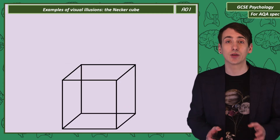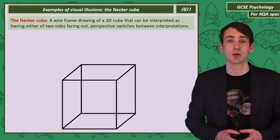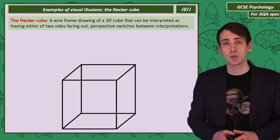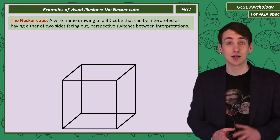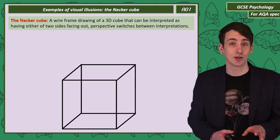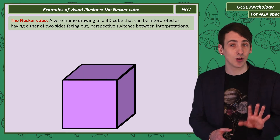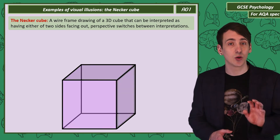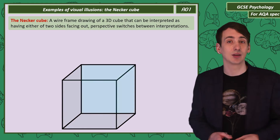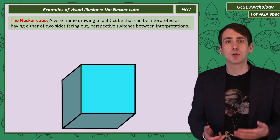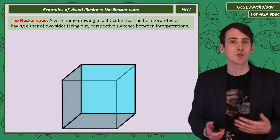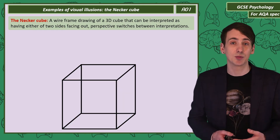The Necker Cube is a drawing of the outline of a cube. You should be able to see this in two ways — as having the bottom square facing out or the top square facing out — and your brain can switch between both perspectives.